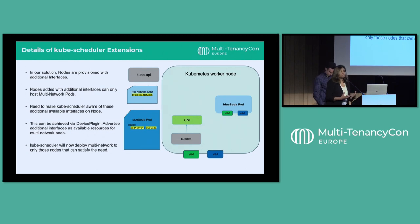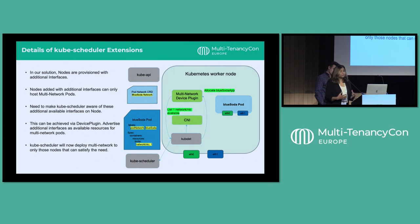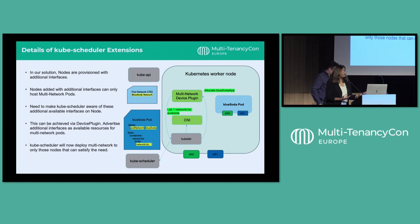Now let's talk about the kube-scheduler. How would kube-scheduler know which is a special node with additional NICs? Not all nodes in the Kubernetes cluster should host multi-network pods — we want to secure system node pools, and only some node pools have additional network policies to host these multi-network pods. We achieved this using device plugins. With device plugins, we can extend the node capability — they register additional interfaces as a resource and make them first-class, learning about available interfaces on the node and passing that information to the kube-scheduler. When a pod requests an additional NIC, kubelet passes that to the device plugin, which reserves and allocates it, and CNI projects that interface into the pod.